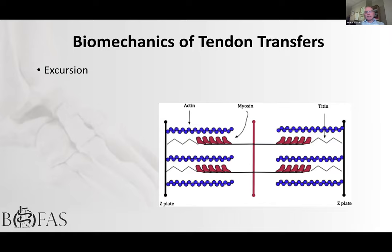Regarding biomechanics: excursion matching via actin-myosin sliding is important. If the donor tendon has a larger excursion than the tendon being replaced, put it in slightly tighter than you think to compensate for both tendon stretching and excessive excursion. A little extra tension will compensate and still give a good functional result. Even without muscle contraction, a good tight tenodesis in a mobile joint can provide an excellent outcome.